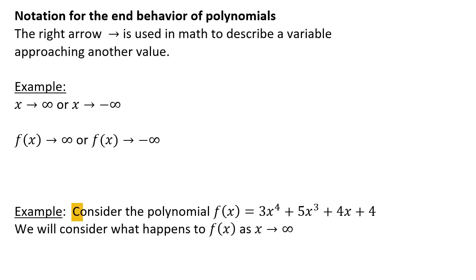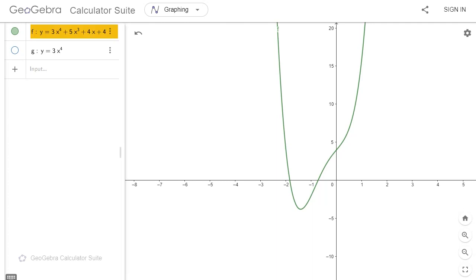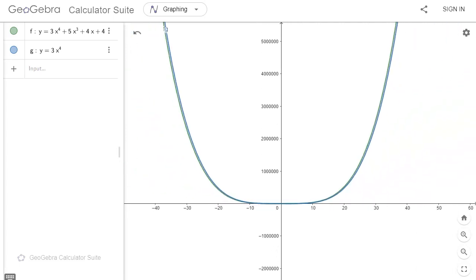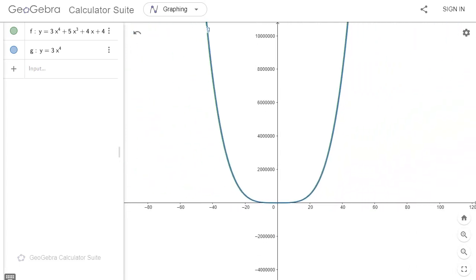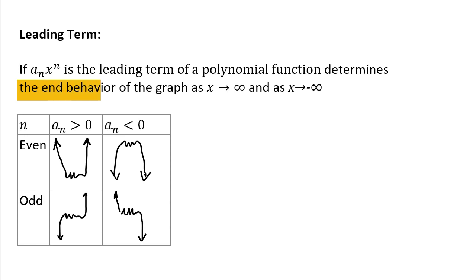We'll consider the polynomial f of x equals 3x to the power 4 plus 5x cubed plus 4x plus 4, and think about what happens to the y values as x approaches infinity. Looking at its graph compared with just the leading term, they don't look similar at all up close. But if we zoom out where y is a million or 10 million, they're indistinguishable. The leading term, a sub n x to the power n, determines the end behavior as x approaches both positive and negative infinity.